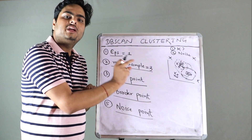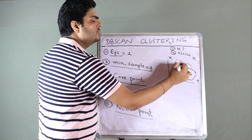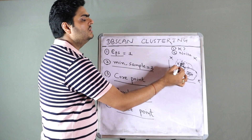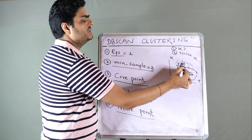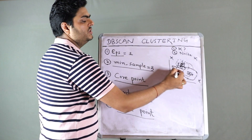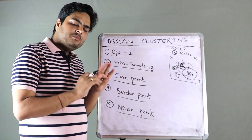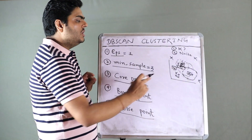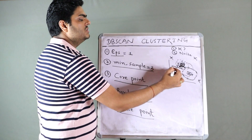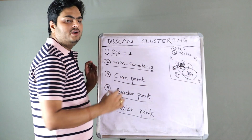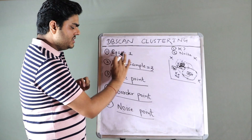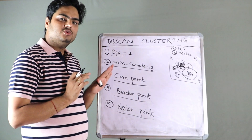In areas of high density we will have many core points. Starting with one core point, we look at neighboring points to see if they are also candidates for core points. There can be many core points, and all core points that relate to one another — where each point is a neighbor of another — will be called one cluster.